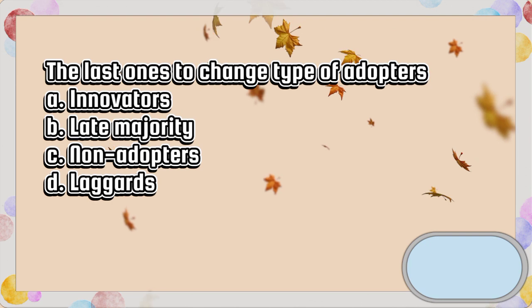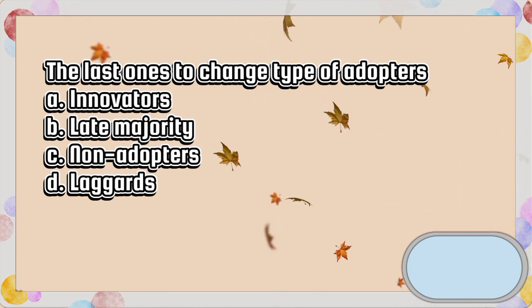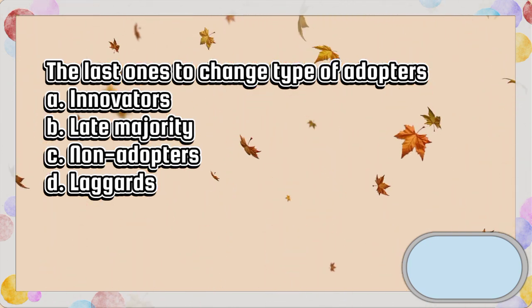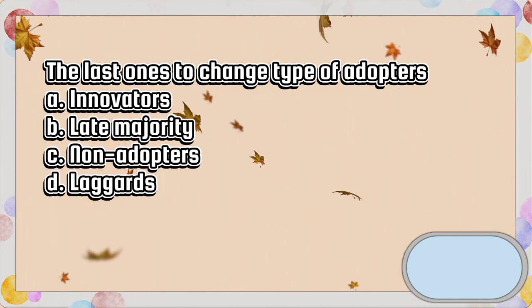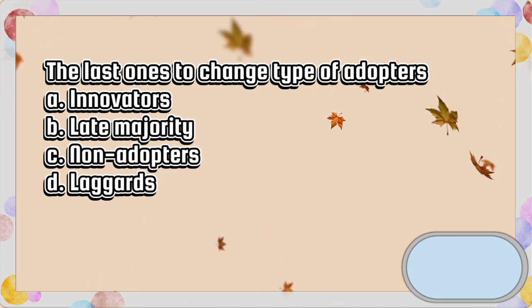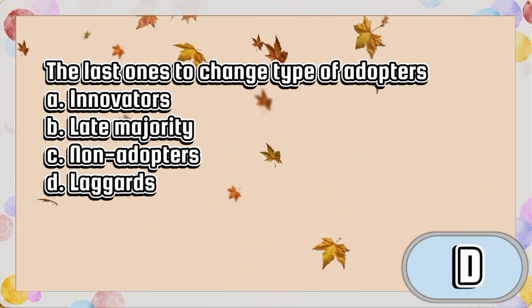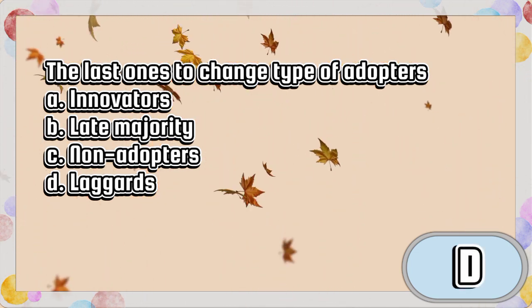The last type of adopters. A. Innovators. B. Late Majority. C. Non-adopters. D. Laggards. The answer is letter D.